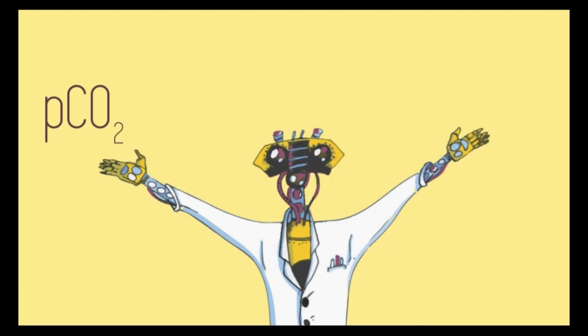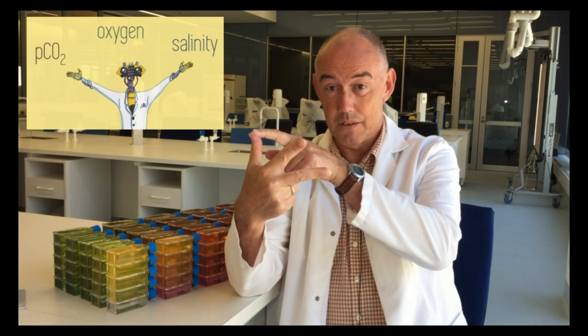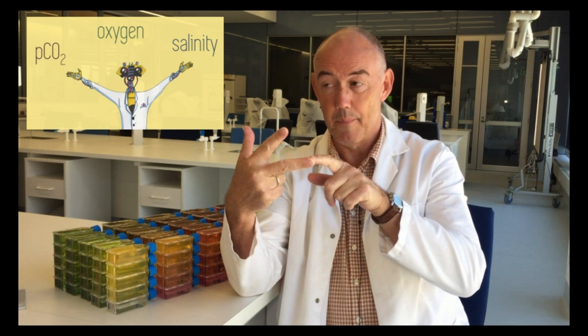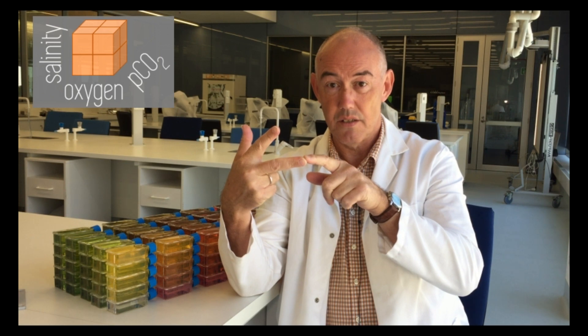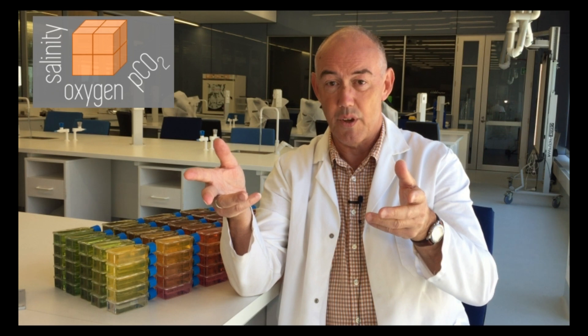Let's assume I've already done that and I'm interested in the impacts of pCO2, which is going to go up with climate change; oxygen, which is probably going to go down in the area where I work in Scandinavia; and freshening, because salinity is likely to go down there too. So I've got three factors — ambient and future pCO2, ambient and future oxygen, and ambient and future salinity — giving me a two-by-two-by-two design, which is two cubed, that's eight treatment combinations: a traditional fully factorial design.